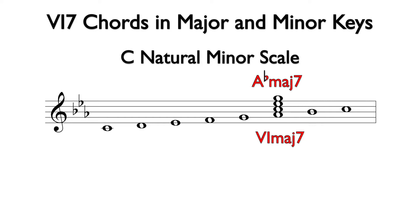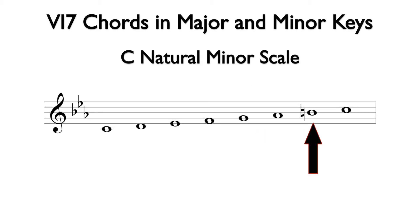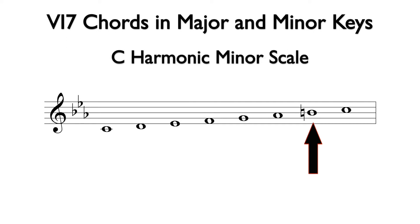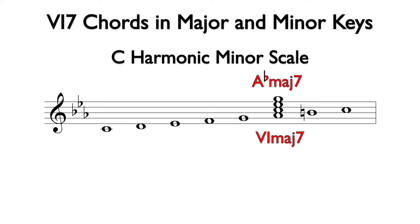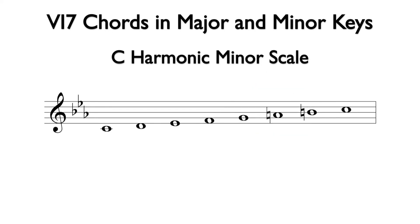The sixth major seven chord is the common sixth-seven chord in a minor key. If we raise the seventh degree of the natural minor scale, it becomes harmonic minor. In the key of C minor, the B flat becomes B natural. Since B is not part of the sixth major seven chord, this chord remains the same in both natural and harmonic minor.